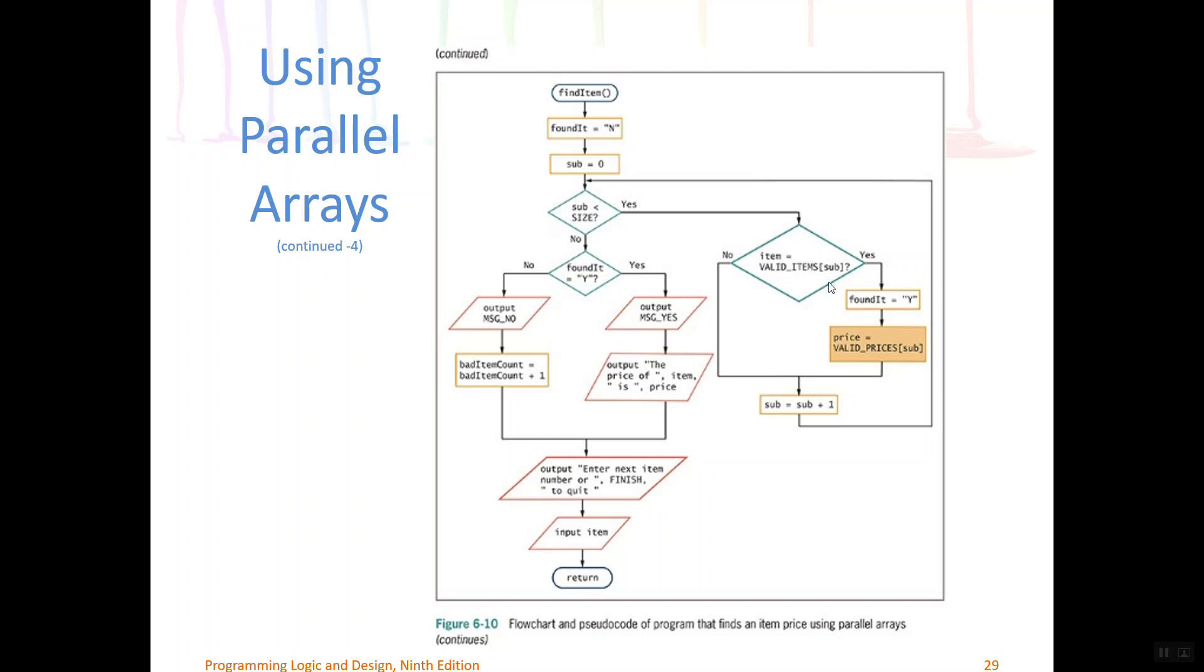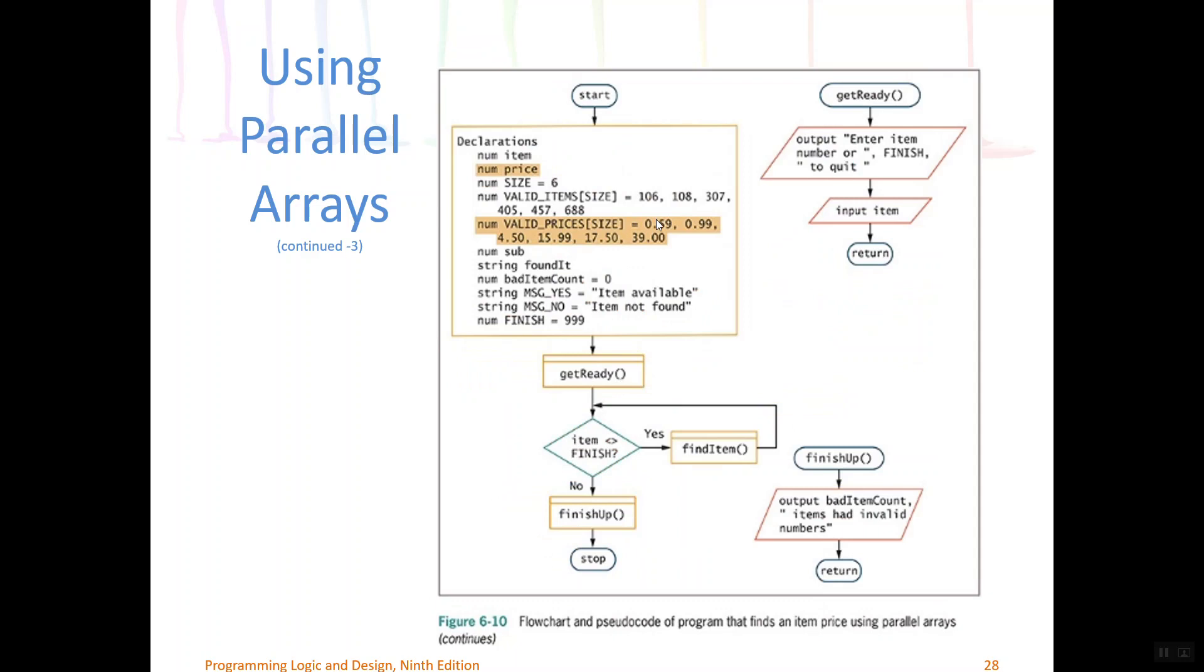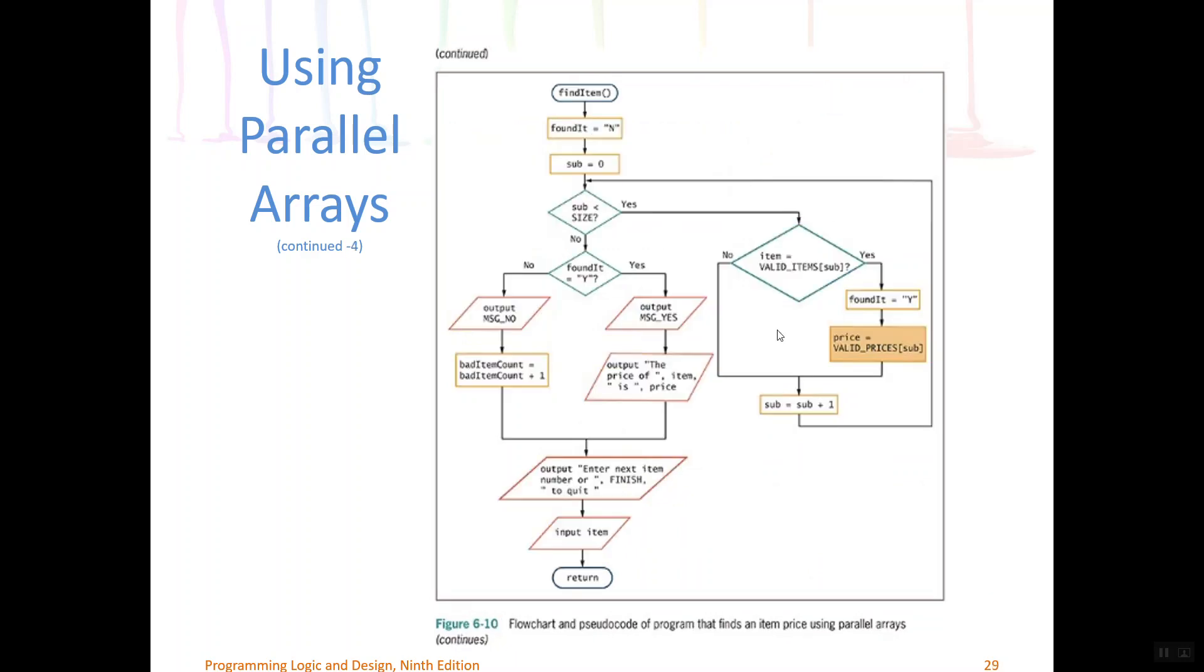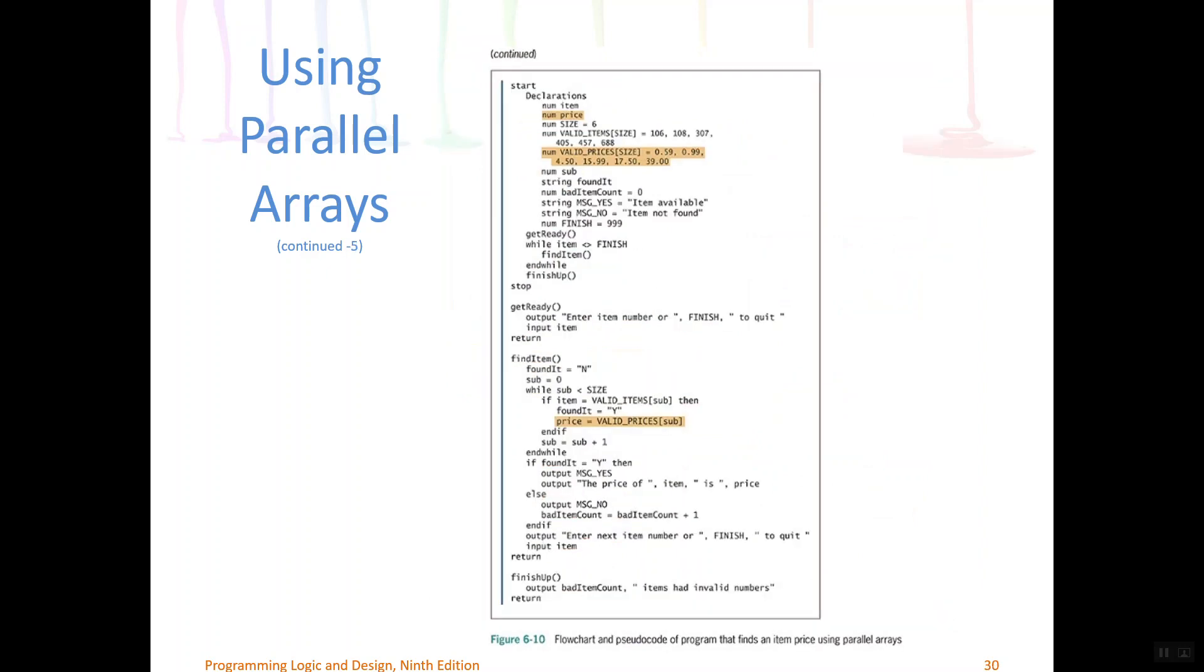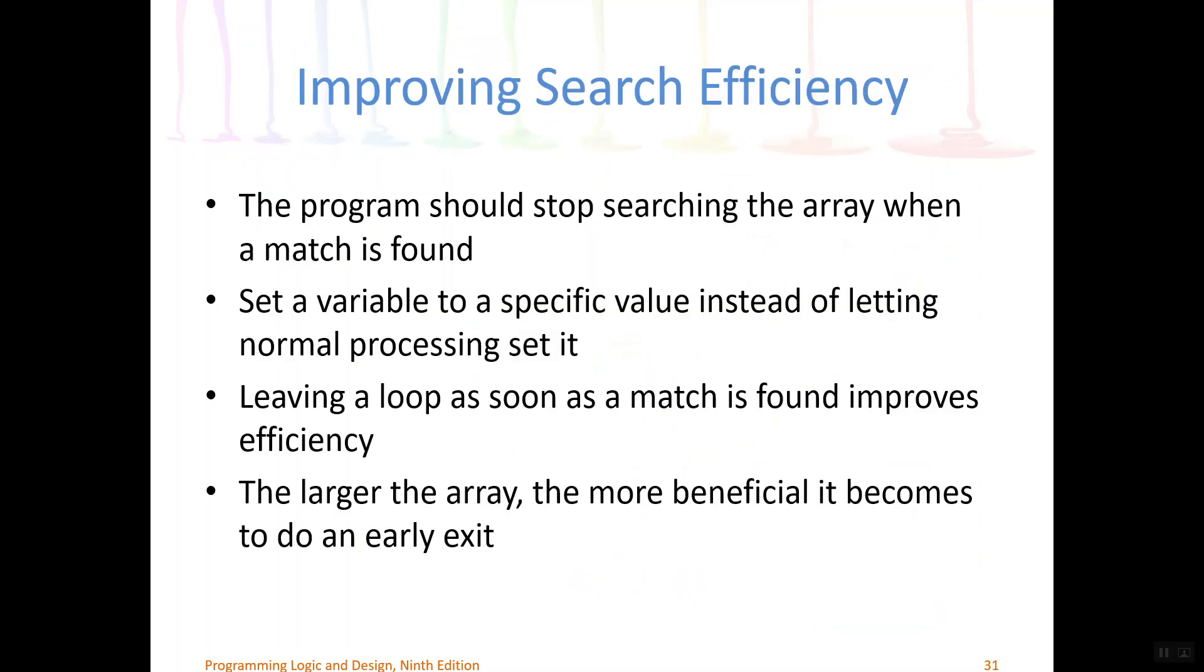And then later, after we finished searching the array, we check was foundIt yes. In this case, since it was, we'll output the positive message. But then we'll also tell them the price of item 106 is, and then we'll output the price. So in this case, that would be 59 cents. So that's how we can utilize parallel arrays in our programs.